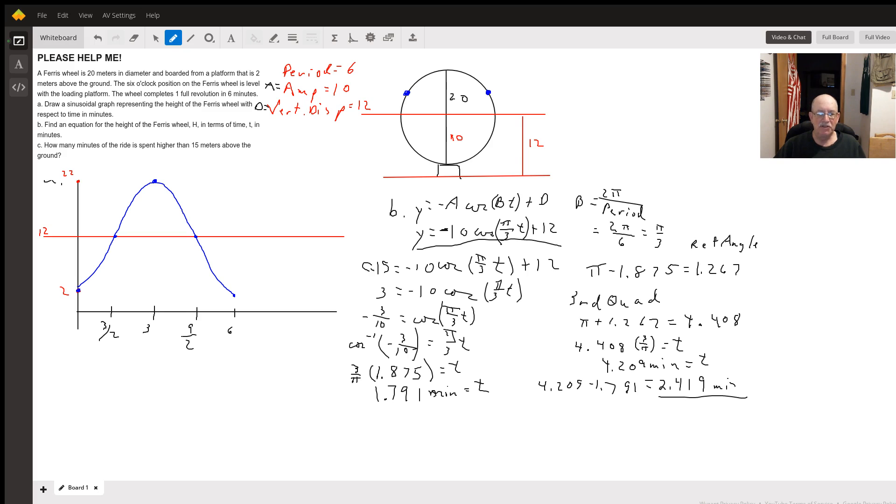We'll subtract 12 from both sides and get 3 equals negative 10 cosine π over 3t. Divide both sides by negative 10, then we take the inverse cosine. So the inverse cosine of negative 3 tenths is going to equal π over 3t. That comes out to be 1.875. Multiply both sides by the reciprocal of π over 3, so we get 3 over π times 1.875 equals 1.791 minutes. So over here it takes us 1.791 minutes to get to this point.